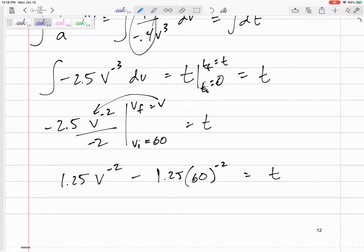If I wanted to, I could rearrange this a little bit and solve for v, but let me just plug in time. I want to know when t is equal to 4, what is v? I only have one unknown. You can solve an equation with one unknown.